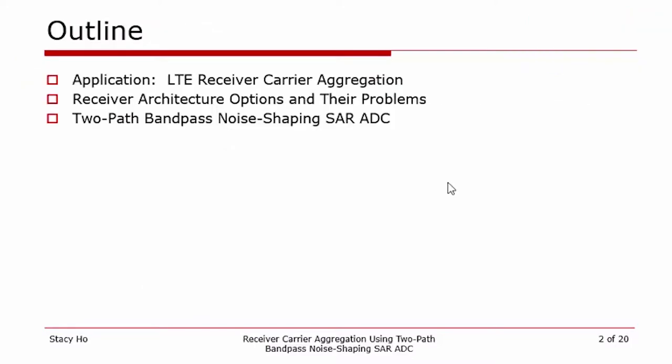The outline of this lecture is as follows. First, we'll look at the target application, which is carrier aggregation in LTE. Then we'll discuss what the receiver architecture options are and their associated problems. Finally, we'll wrap up with the proposed two-path bandpass noise shaping SAR ADC that is tailored for this application.